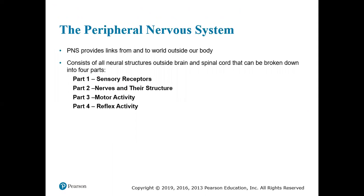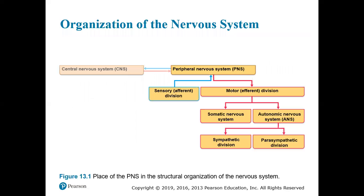If you think about the peripheral nervous system in contrast to the central nervous system, the peripheral nervous system is the part of the nervous system that's really in touch with the environment, whether that is your internal environment or the external environment. It is constructed of everything outside of the brain and the spinal cord, and we can break it down into four parts: sensory receptors, nerves and their structure, motor activity, and reflex activity.